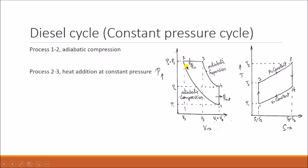During this process, the pressure remains the same and the volume slightly increases from V2 to V3. On the TS diagram, the temperature increases from T2 to T3 and entropy from S2 to S3. The temperature T3 will be maximum in the whole cycle. After the heat is added to the gas, it has to expand.